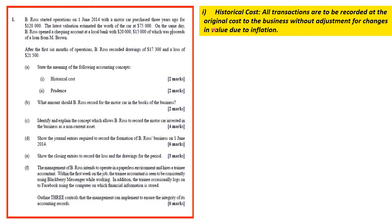The key words there are the original cost of the item to the business, and there are to be no adjustments for changes. This is why we normally have two accounts for assets — one to record the original cost or historical cost, and the other to record the depreciation or the change in the value of the asset.